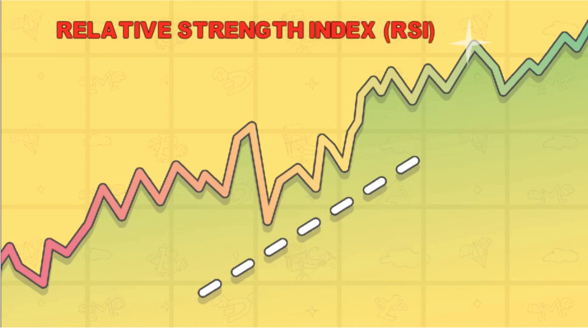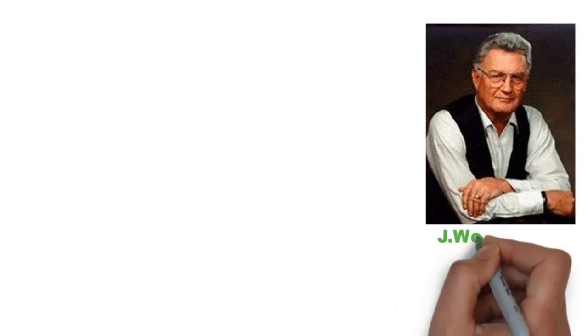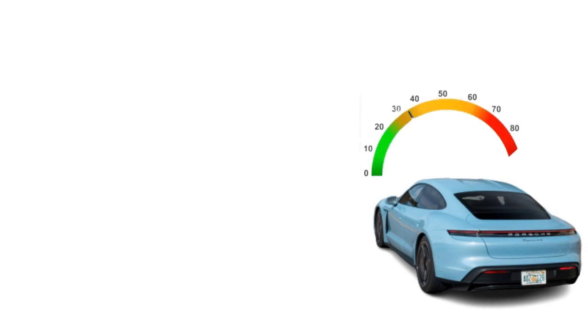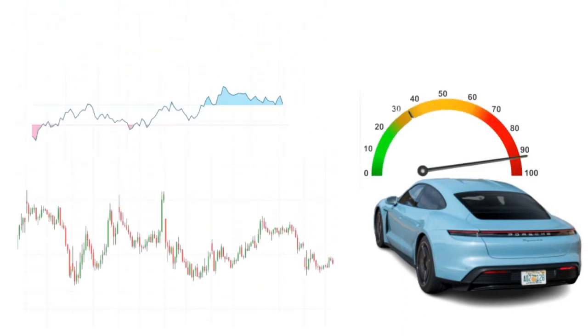Let's see quick basics. RSI was developed by J. Wells Wilder. RSI is a momentum oscillator that measures speed and change in price movements. In the previous video, I gave the example of a speedometer — it's like the speedometer in a car. RSI is the speedometer of the market. Not only RSI, every momentum indicator tells us this. We just need to understand it.